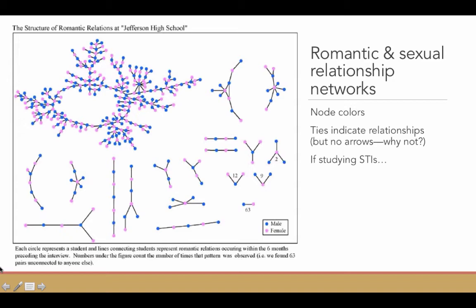This is a visualization of a romantic relationship network at a fictional high school called Jefferson High School. This high school has about 575 students, 10th through 12th grade, represented in this picture.